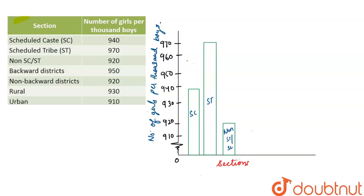And let's make for backward districts. I will be representing with BD because inside bar graphs backward districts can't be written properly. And here we have non-backward districts, I will be representing as NBD. So let's make the bar graph for backward districts. It is 950, so 950 will be from here. This is for backward districts.